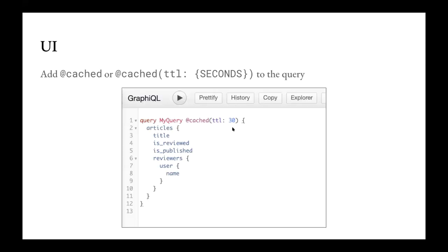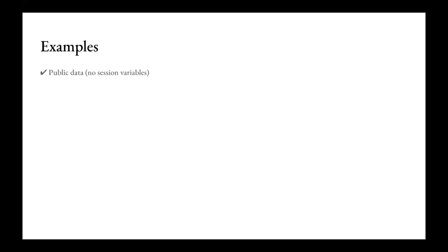Because we only have to go to the in-memory LRU cache, we don't have to go all the way to Postgres and other data sources — obviously this can improve query performance quite a lot. Some examples of caching we support right now: if you have public data that doesn't mention any session variables, such as the content of a front page on a news website that anybody can view and doesn't need to know your role, we can definitely cache that. The 'latest articles' example I gave is an example of that.